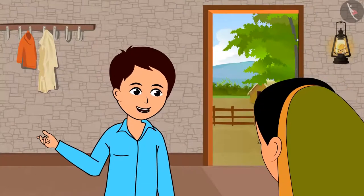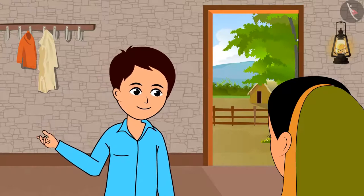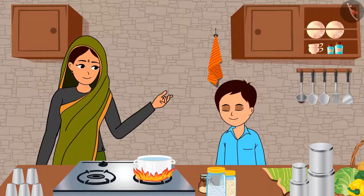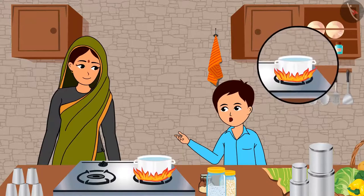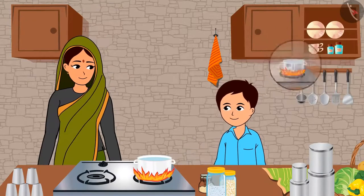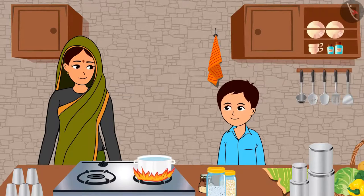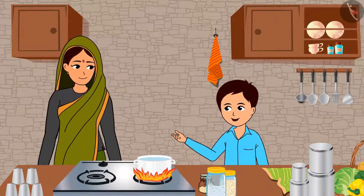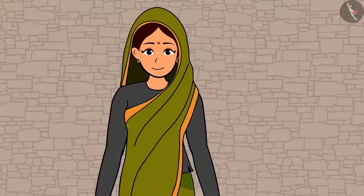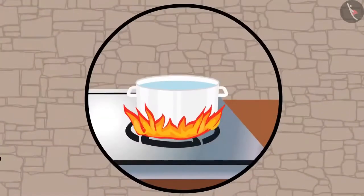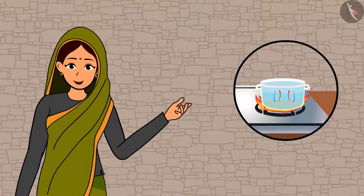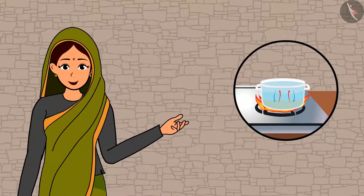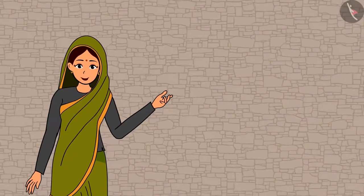Mother, I want hot water to take a bath. Can you boil some water for me? Yes, Raja. Wait for a while till the water heats up. Mother, the water close to the flame heats up faster, right? Yes, Raja. Then all of the water heats up together. The water near the flame heats up first, then it rises up. Then the cold water around it takes its place. Then similarly, the water heats up and rises. This continues till the whole water in the vessel heats up. This is known as convection.